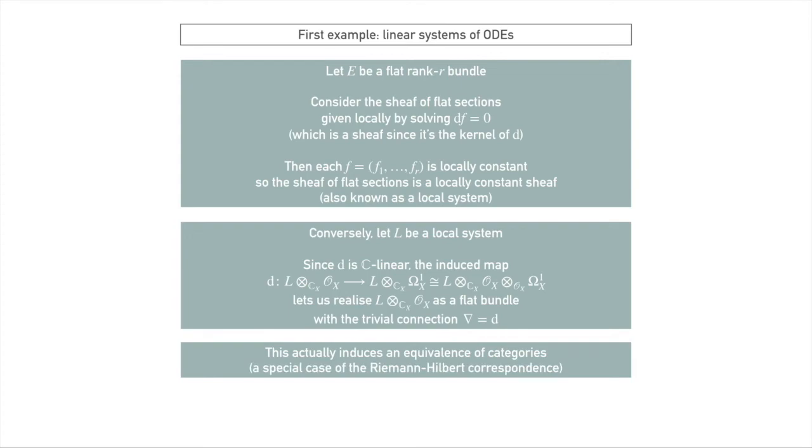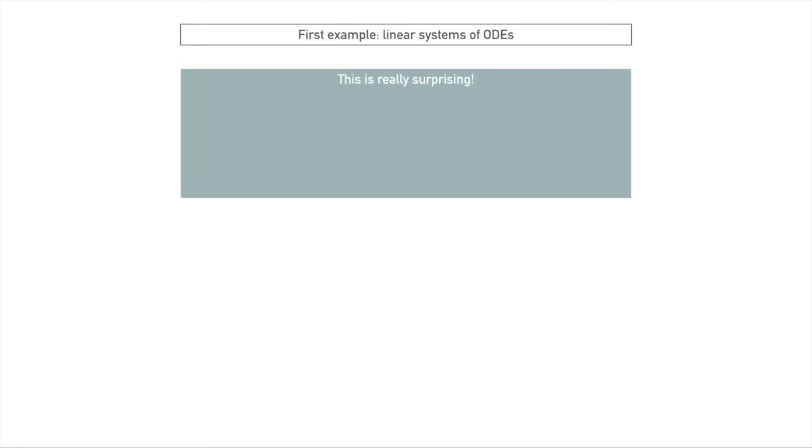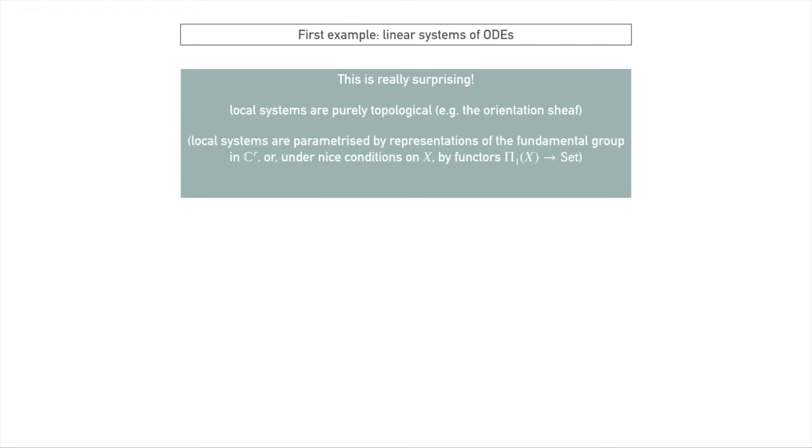And this is actually really surprising because local systems are purely topological things. A good example of local systems is the orientation sheaf of a surface. They really just care about the topological structure. And you can formalize this even more because local systems, you can show that these are in fact parameterized by representations of the fundamental group in C^r. Or if your space X is nice enough, then their local systems are parameterized by functors from the fundamental groupoid into set. So these just see the topological structure of X. There's no analytic things in them at all. But the flat bundles are analytic objects. As we've seen, they talk about solutions to initial value problems. They care about how the differential acts on sections. There's analytic data in there.